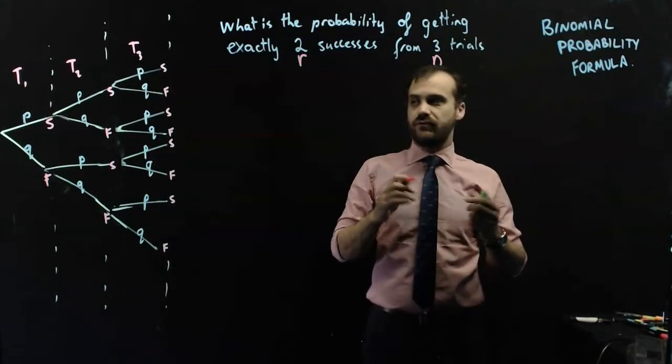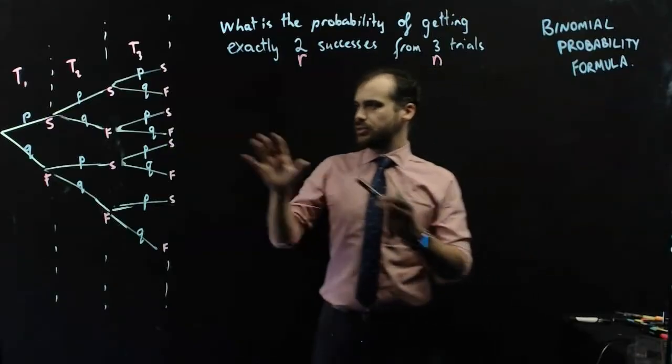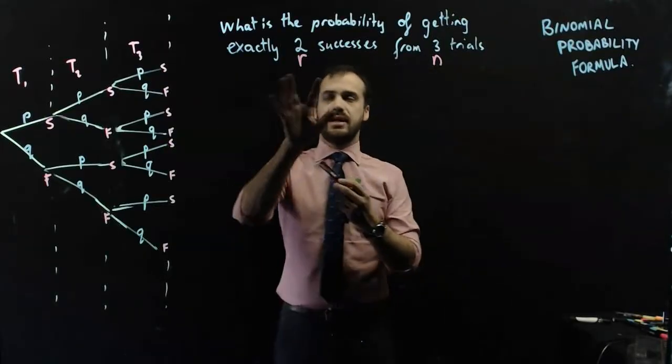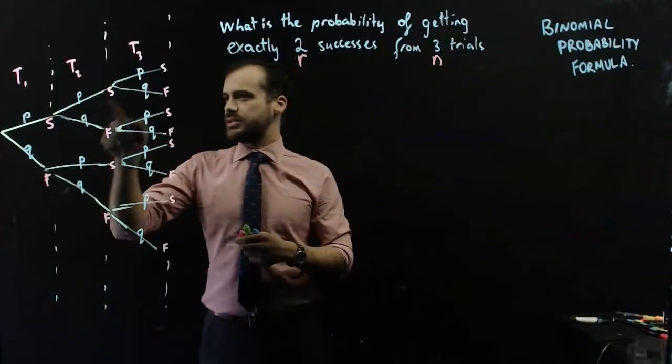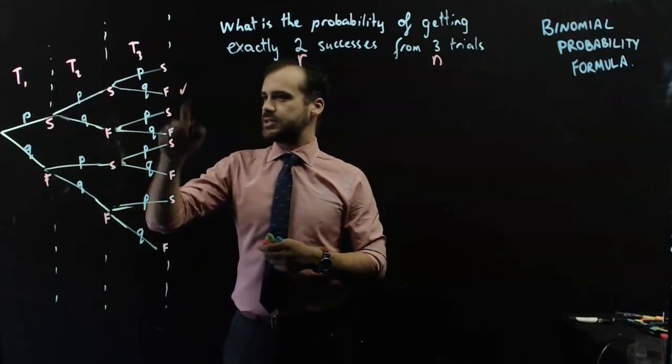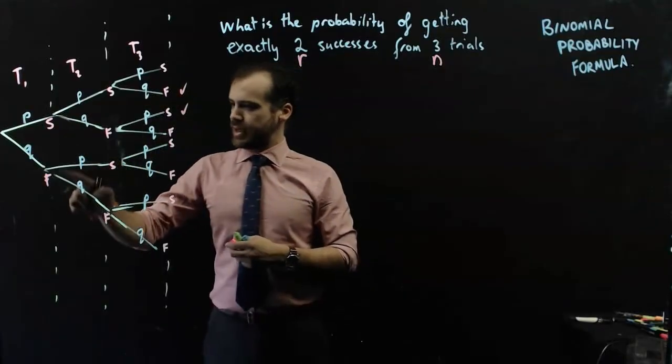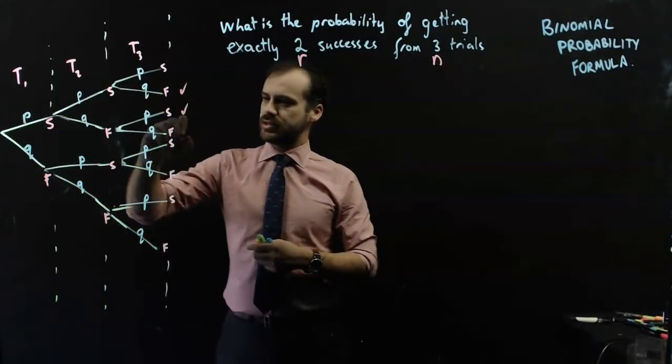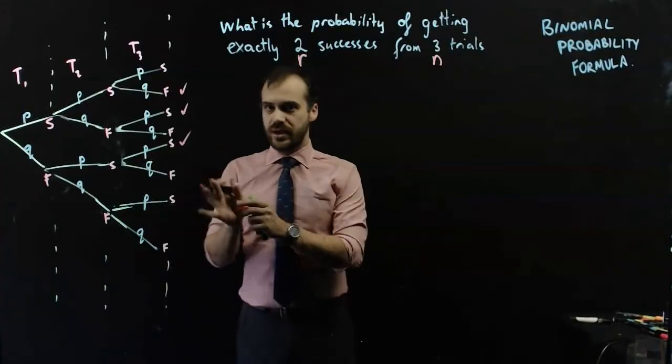And I'm going to use those letters to create our formula. Now let's look at a branch where exactly two successes happen. Success, success, failure. It happens there. Success, failure, success. It happens there. And failure, success, success. It happens there.